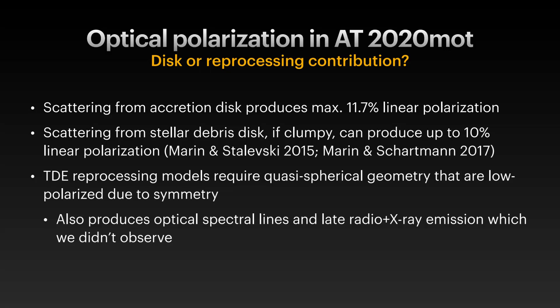Linear polarization can also come from reprocessing and from the accretion disk. At maximum edge-on inclination, a disk can produce up to 11.7% linear polarization, and a clumpy stellar debris disk might produce around 10%. But neither can explain the full 25% polarization. Also, TDE reprocessing models require quasi-spherical geometry, which is low-polarized due to symmetry, and reprocessing produces spectral lines and late radio and X-ray emission — none of which we observed.